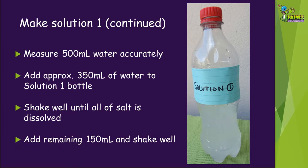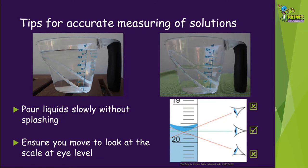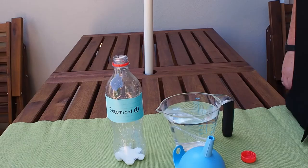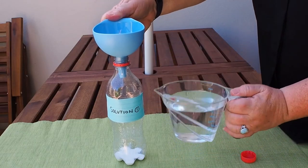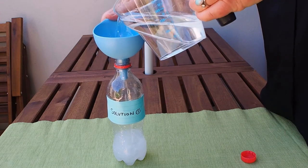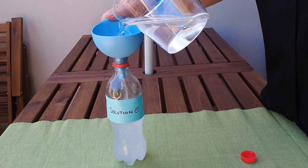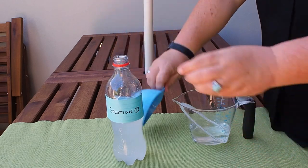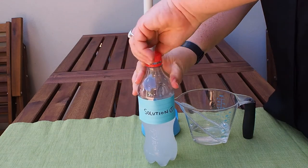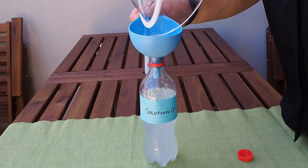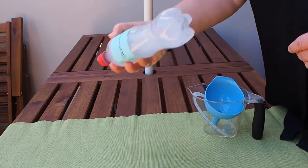Next we're going to dissolve the salt to make solution one. We will be dissolving our 10 grams of salt in 500 millilitres of water, but we're not going to add all of the water at once. Pour the water slowly, trying not to splash it, and make sure you look at the scale on the jug at eye level, as reading from above or below can give inaccurate readings. Once you've accurately measured out 500 ml of tap water, pour about 350 ml into the solution one bottle using a funnel — the salt will already be in there. Put the lid on and give it a really good shake until the salt is all dissolved. Once all of the salt is dissolved, pour in the remaining 150 ml of water, put the lid on, and shake well.